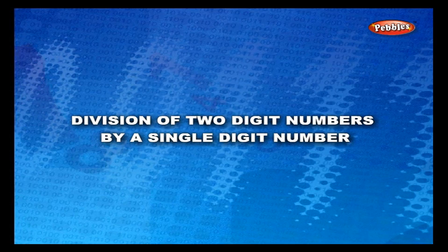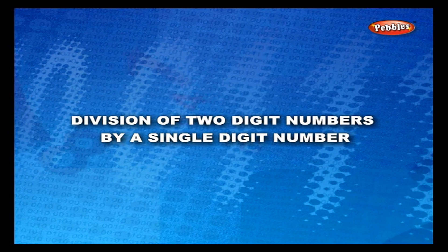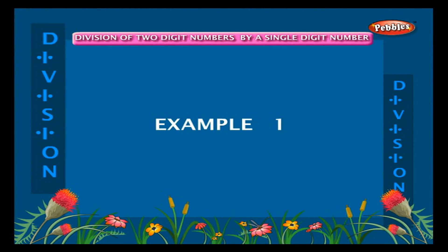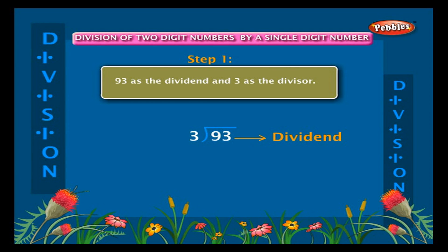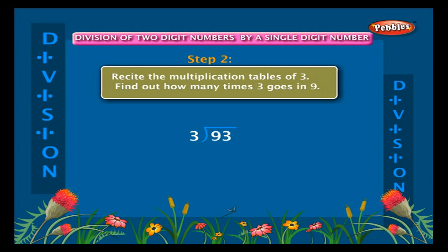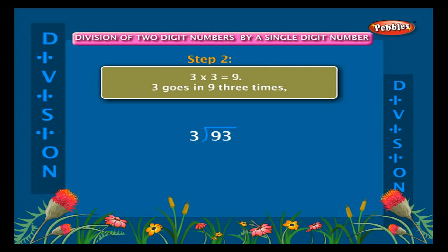Division of two-digit numbers by a single-digit number. Example one: divide ninety-three by three. Let us arrange the numbers in their respective places — ninety-three as the dividend and three as the divisor. Recite the multiplication tables of three. Find out how many times three goes in nine: three into three is equal to nine, so three goes in nine three times.